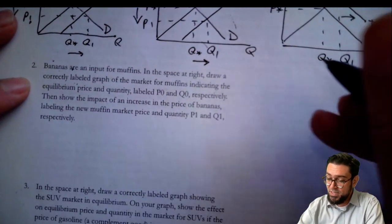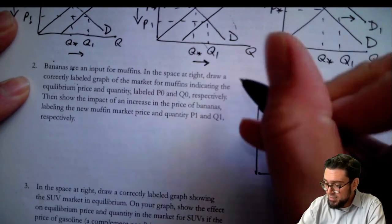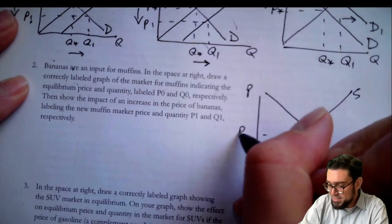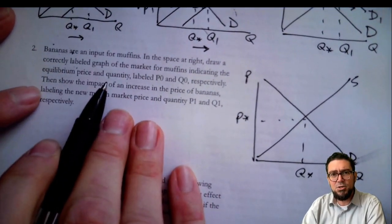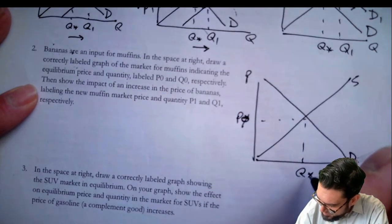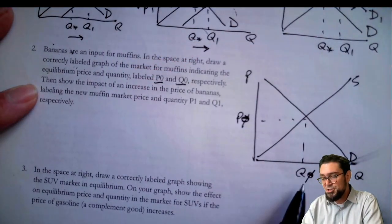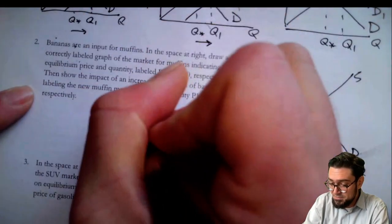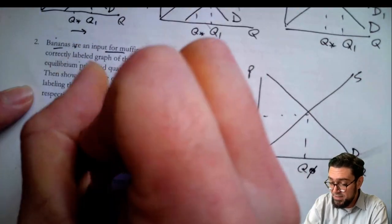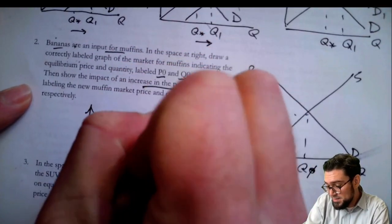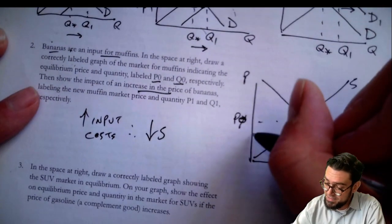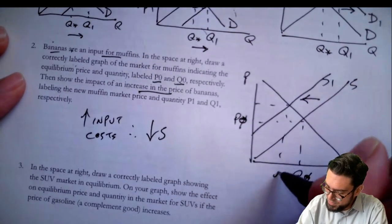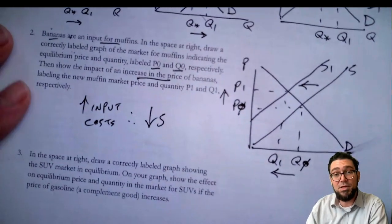Number two: bananas are an input for muffins. Draw a market for muffins. We have price and quantity, downward sloping demand, upward sloping supply, with Q0 and P0 labeled. Then show the impact of an increase in the price of bananas. Bananas are an input for muffins, so higher input costs mean less supply. We're going to decrease the supply to S1, and that's going to reduce the quantity of muffins transacted and raise the price in the muffin market.